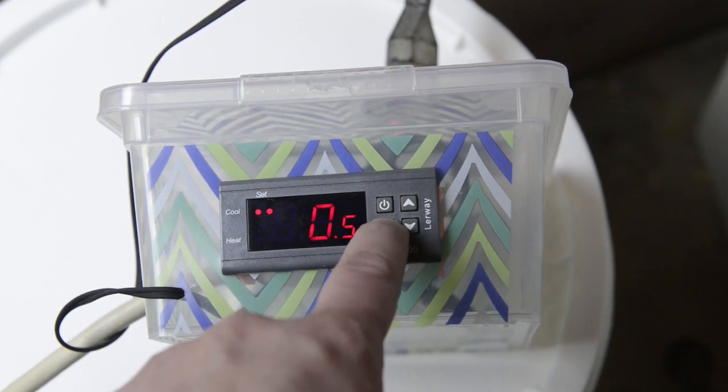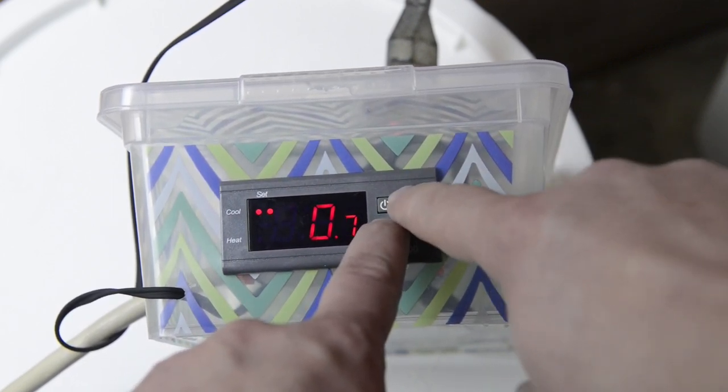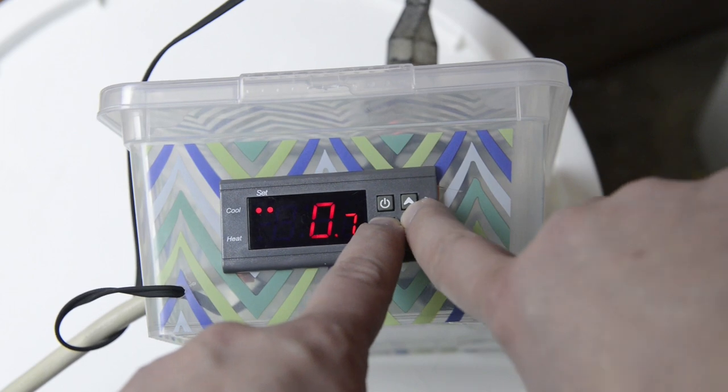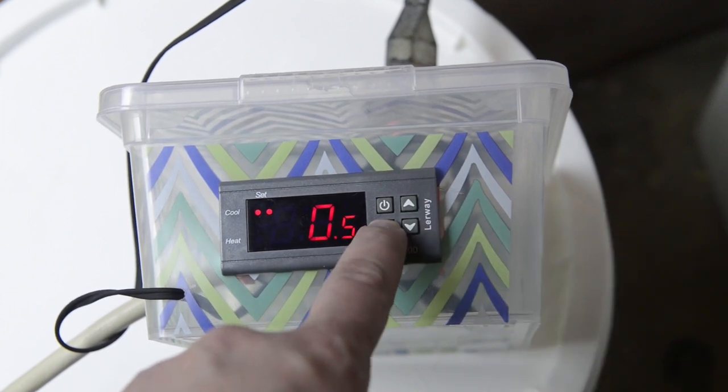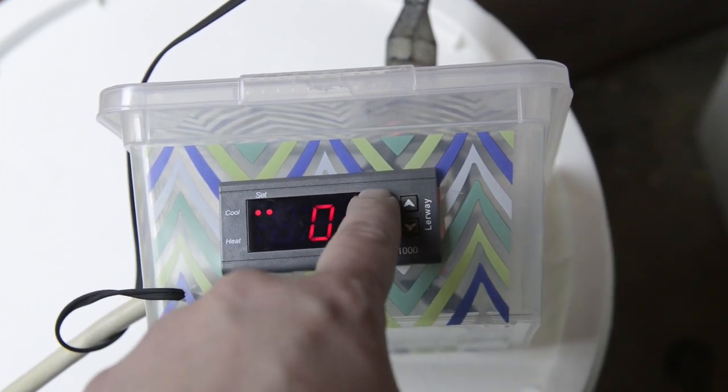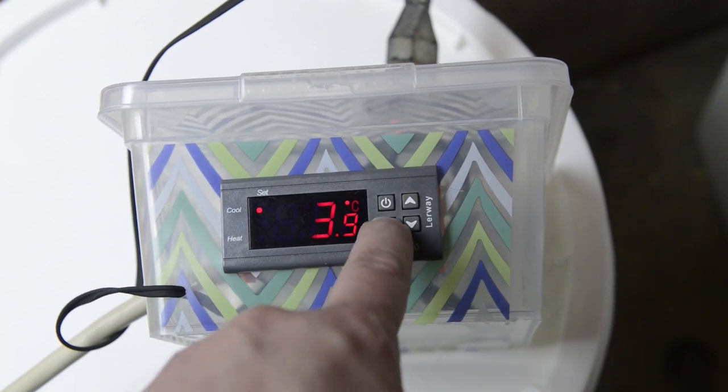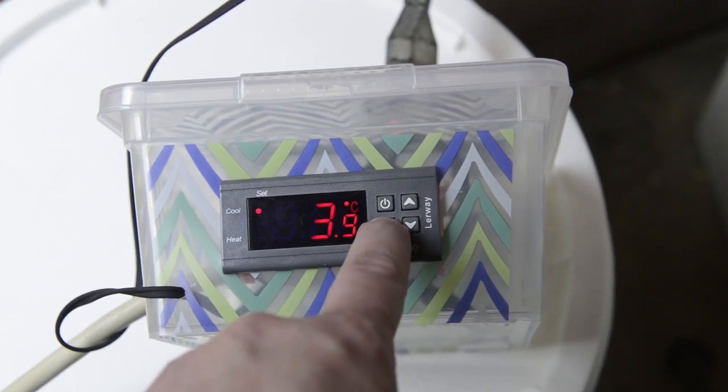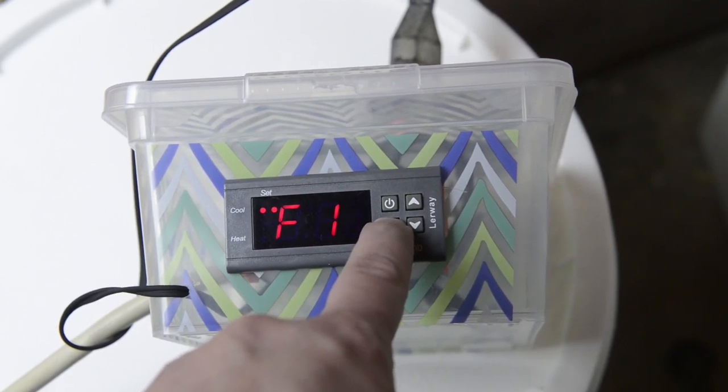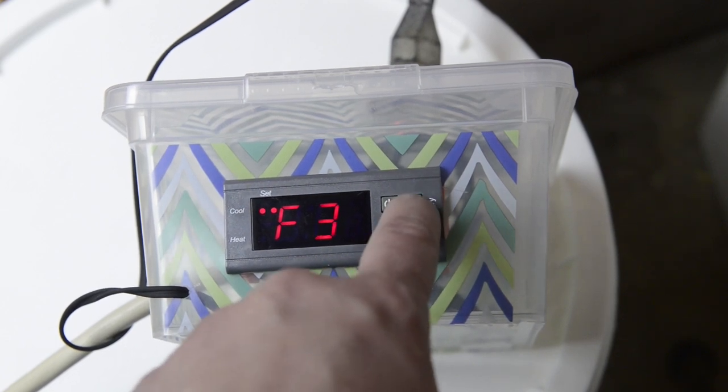F2 is the difference. You can set that to however you want to. The lowest that will go is 0.3. So that's when the sensor or when the STC-1000 will go on. And then you push standby and that sets it again.